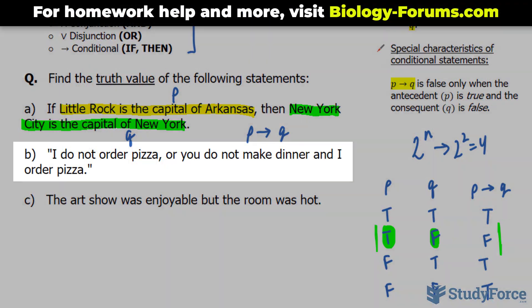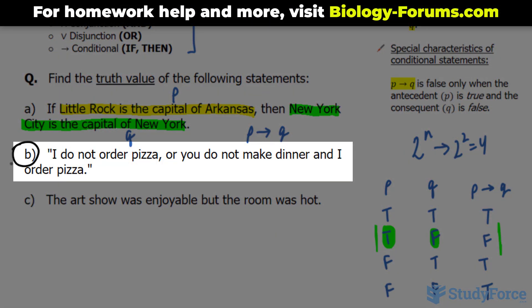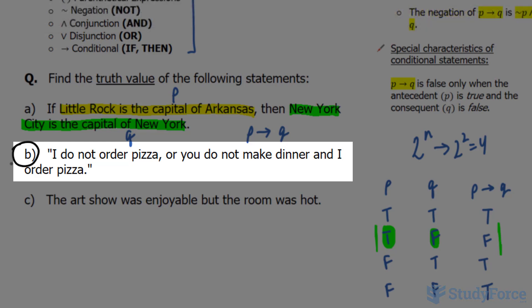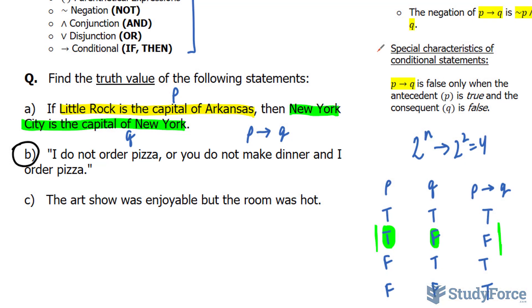The phrase we ended off with is B, and that reads: I do not order pizza or you do not make dinner and I order pizza. So we have two main components in this phrase. Ordering pizza is one of them, and notice that it's negated - we have do not order. I'll use an arbitrary letter to represent ordering pizza, let's use P, just to be consistent with question A.